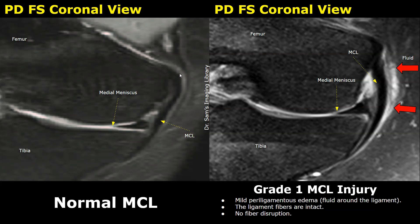A very small amount of fluid is normal. In the image on the right, a grade 1 injury is seen. The dark band — the ligament — is surrounded by some hyperintense fluid. This indicates hemorrhage and edema due to trauma. The edema is mild, the ligament fibers are intact, and there is no disruption or tear in the ligament. Only fluid is present, so this is a grade 1 MCL injury.